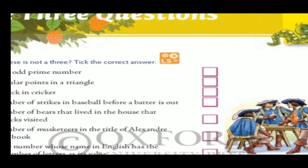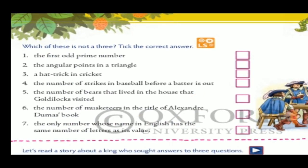At the top of the chapter there is an activity: 'Which of these is not a three? Tick the correct answer.' The options include: the first odd prime number, the angular points in a triangle, a hat trick in cricket, the number of strikes in baseball before a batter is out, the number of bears Goldilocks visited, the number of Musketeers in Alexander Dumas' book, and the only number whose name in English has the same number of letters as its value. The correct answer is the last one — the only number whose name in English has the same number of letters as its value.